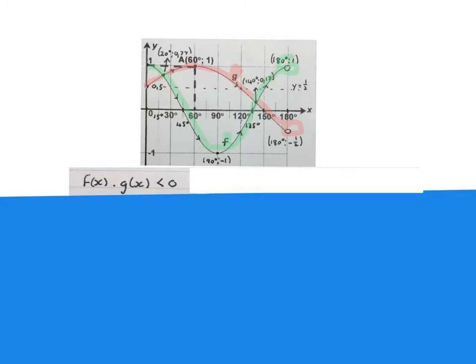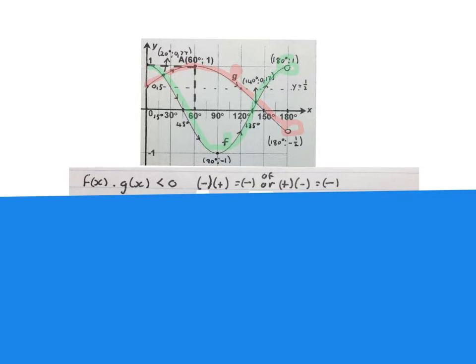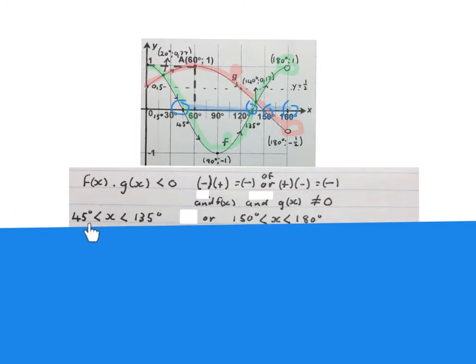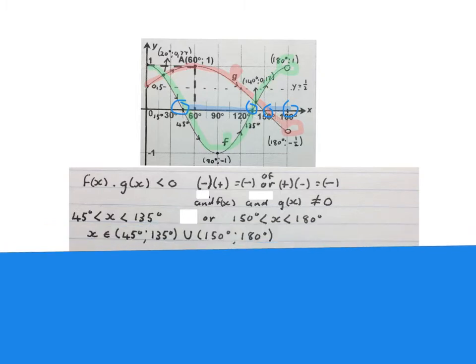The next question asks where is f of x times g of x smaller than zero. Because it's multiplication, a minus times a positive gives a negative, or a positive times a negative gives a negative — so one graph must be positive and the other negative at the same x value, and neither is allowed to be zero. The answer is x is bigger than 45 degrees and x is smaller than 135 degrees, or x is bigger than 150 degrees and x is smaller than 180 degrees. You may also write it in interval notation.